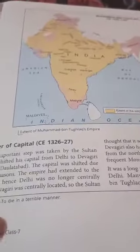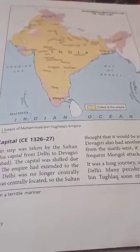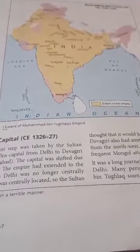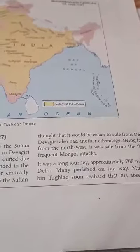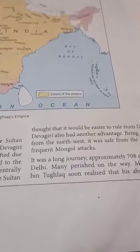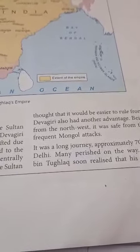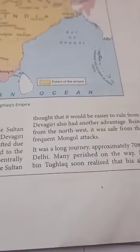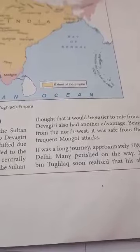The next reform was the transfer of capital. He took a step to shift his capital from Delhi to Devagiri. The capital was shifted because the empire had extended to the south and Delhi was no longer centrally located. Devagiri was the center point at that time, making it easier for the ruler to govern from there.